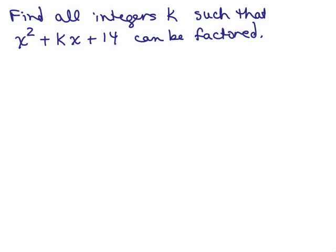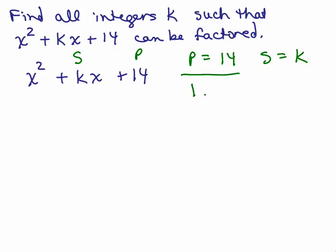This is a challenging problem. Find all integers k such that x squared plus kx plus 14 can be factored. We've got x squared plus kx plus 14. So k is going to be the sum and 14 is going to be the product. The product of numbers to be 14 are 1 and 14, or 2 and 7. Here's the tricky part.